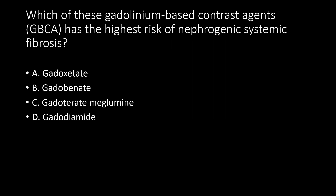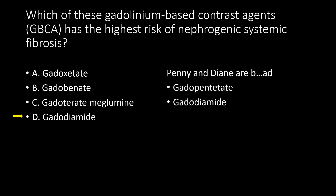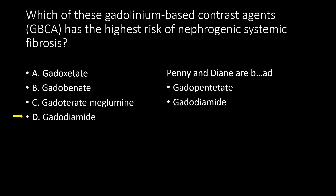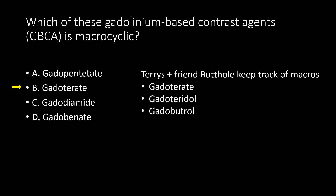Which of these GBCAs has the highest risk of nephrogenic systemic fibrosis? We're looking at the linear buddies who are bad and mean — but more than Benny, Diane has the highest risk of nephrogenic systemic fibrosis. Penny and Diane are bad. Which of these gadolinium-based contrast agents is macrocyclic? The Terrys and their friend Butthole keep track of macros. So of the answer choices, gadoxetate — one of the Terrys — is macrocyclic.